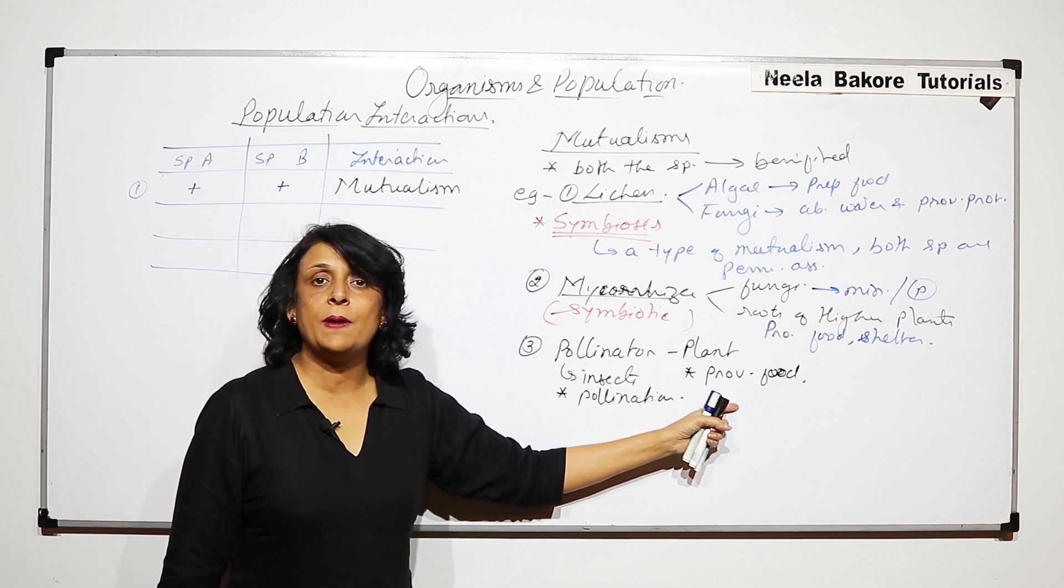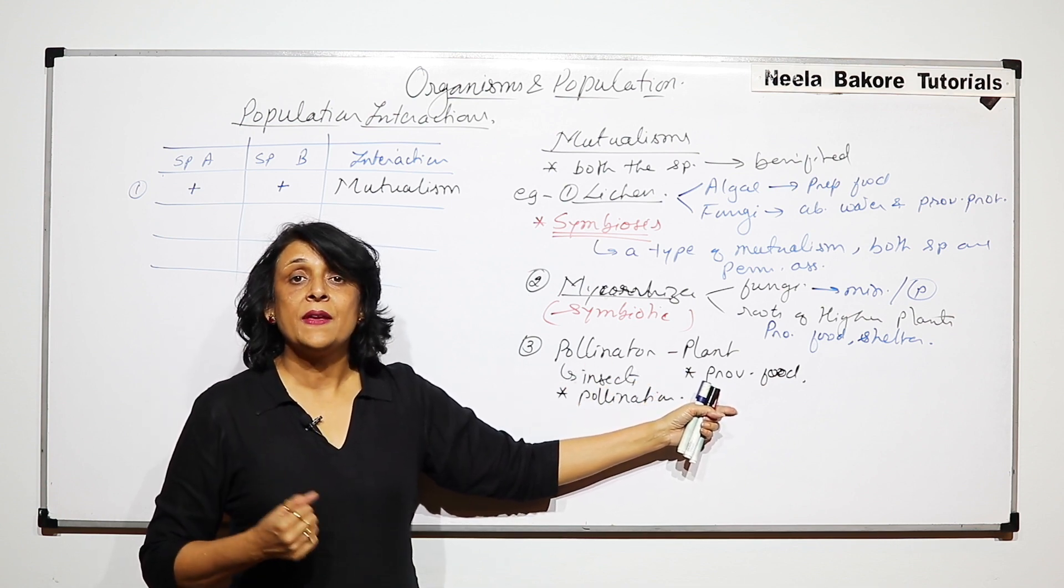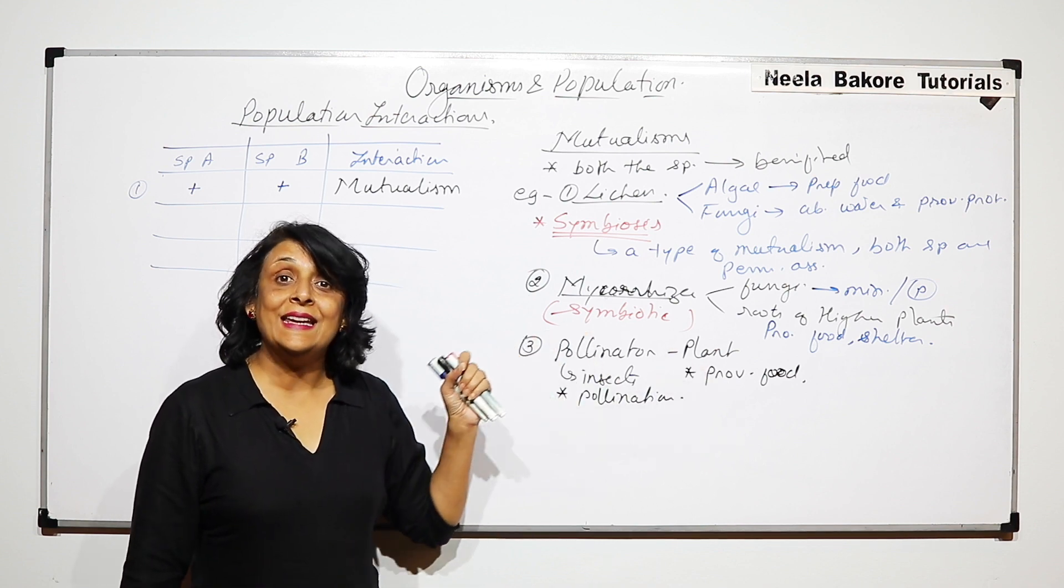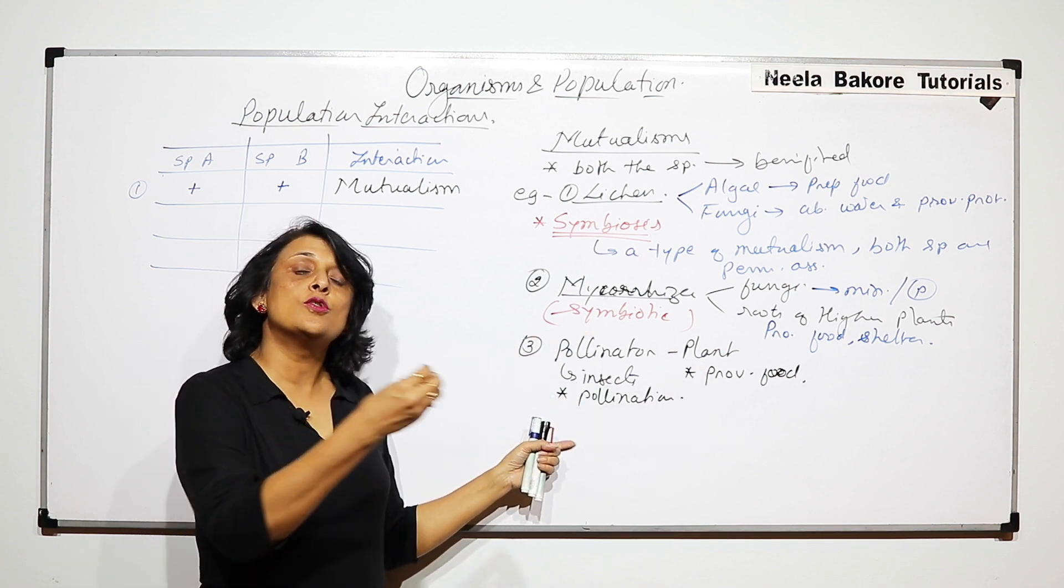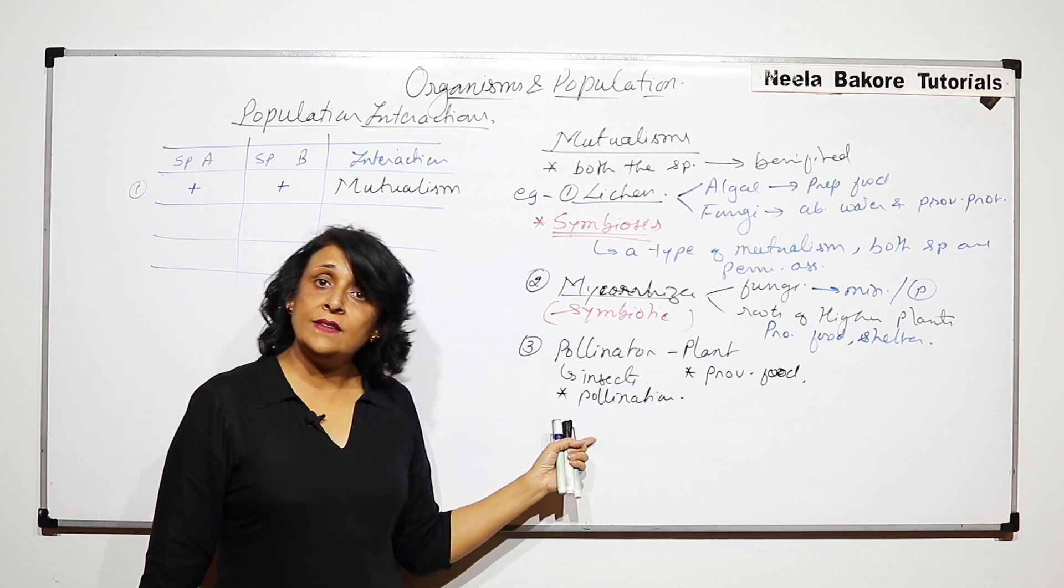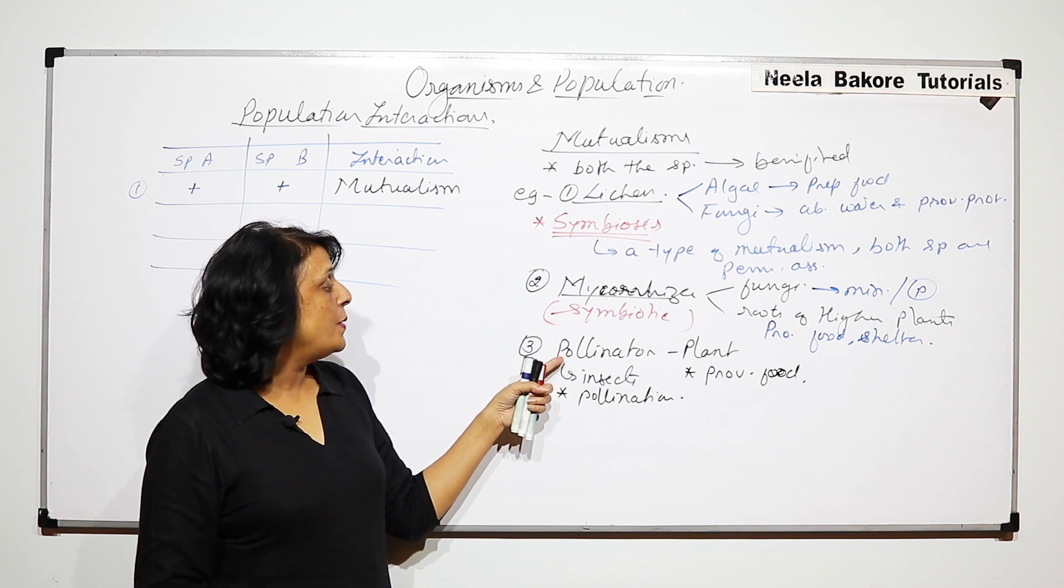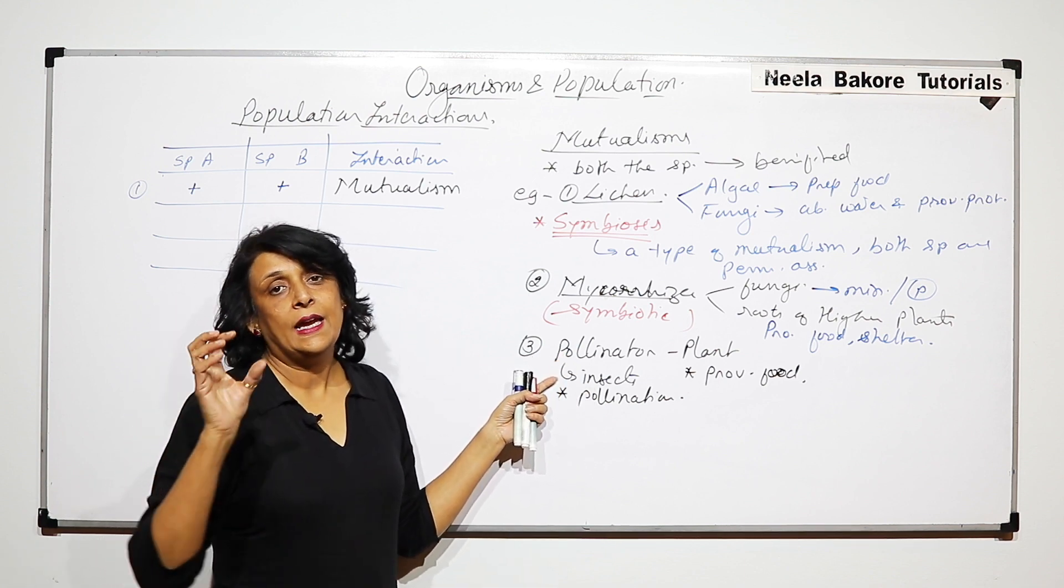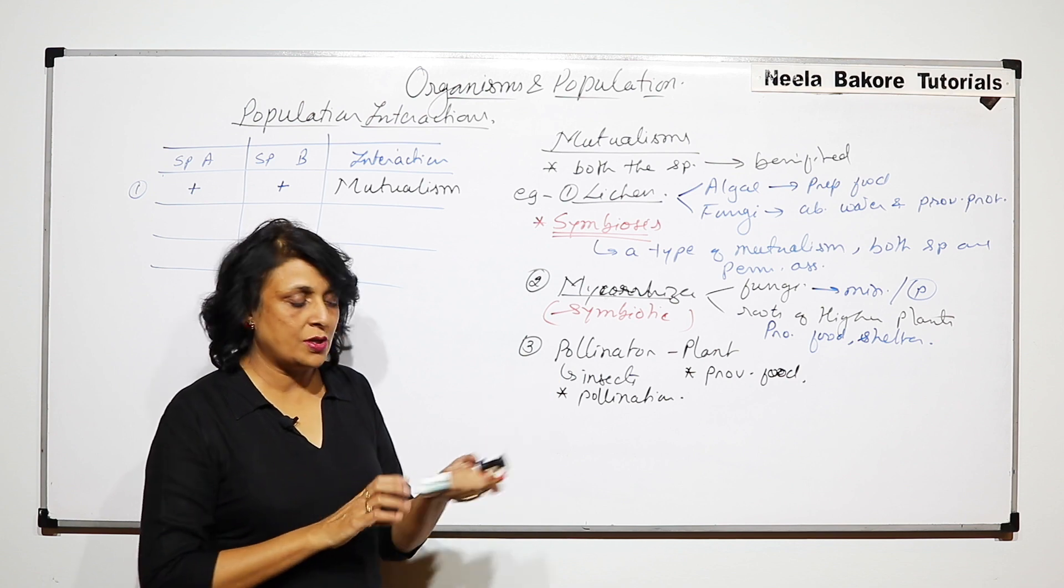So the insect is going to the plant in order to get the nectar, which is the food or the pollen, which can be the food. And in turn, would disperse those pollen grains from one flower to another flower. So this is mutualism. And now, because this insect is moving from one plant to the other, it is not a permanent association.